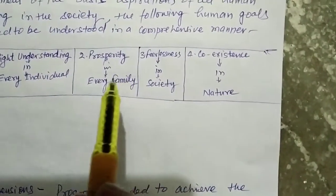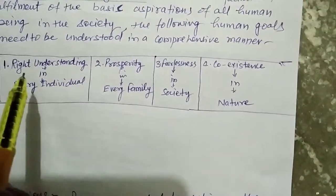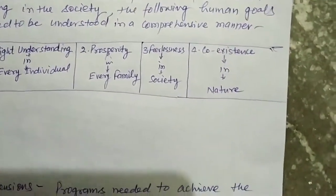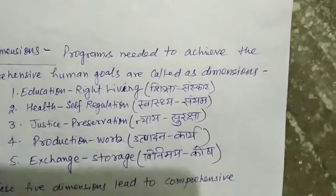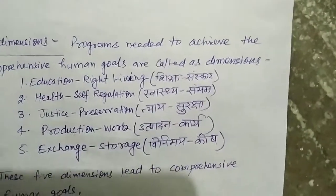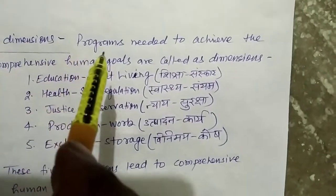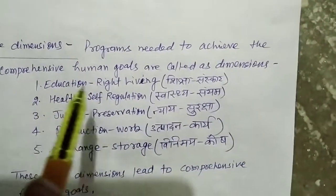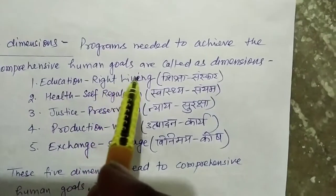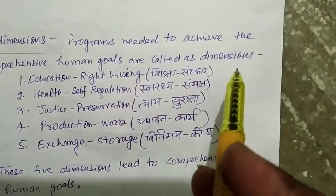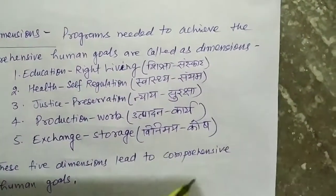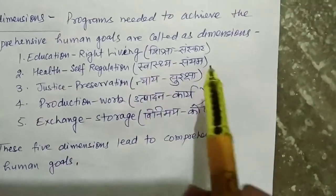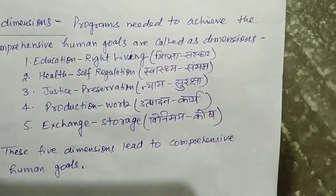Prosperity in every individual. The five dimensions needed to achieve the comprehensive human goals are called dimensions. These are the five dimensions to achieve the comprehensive human goal.